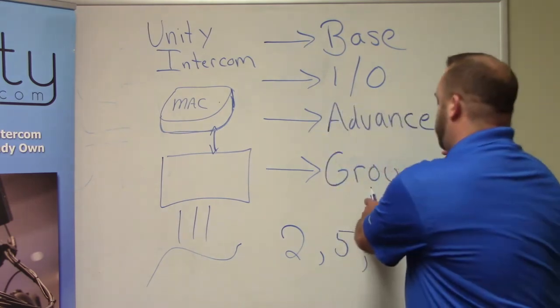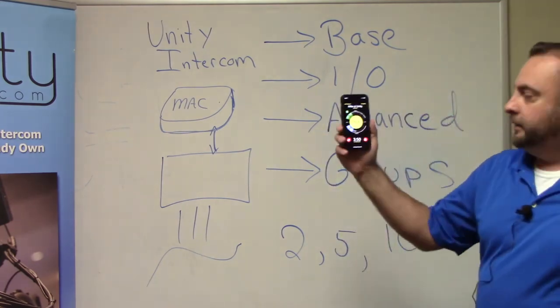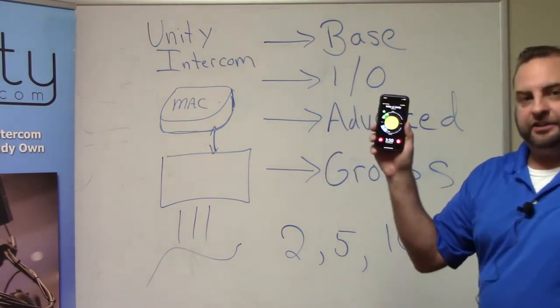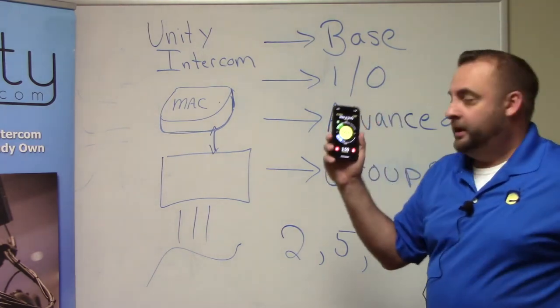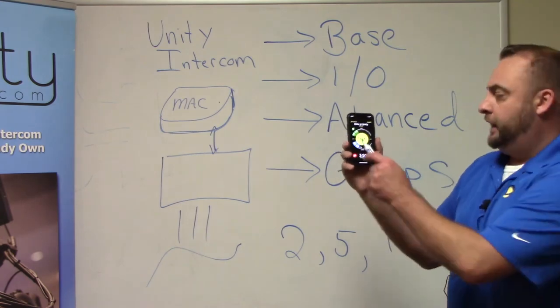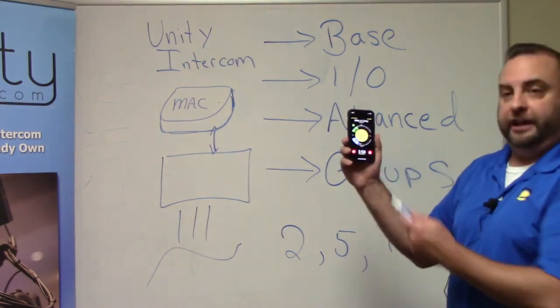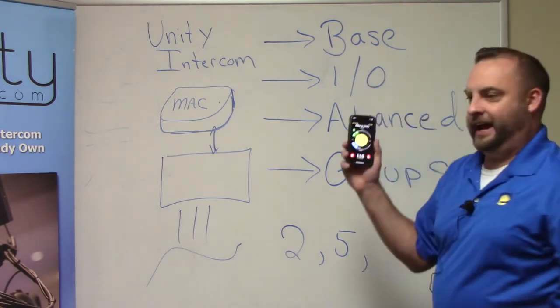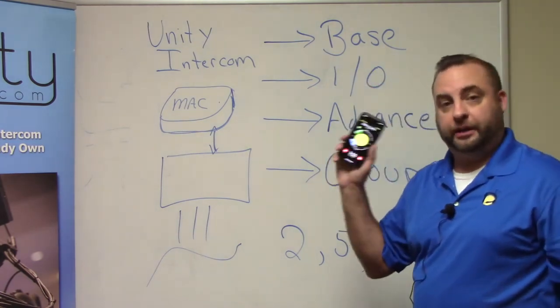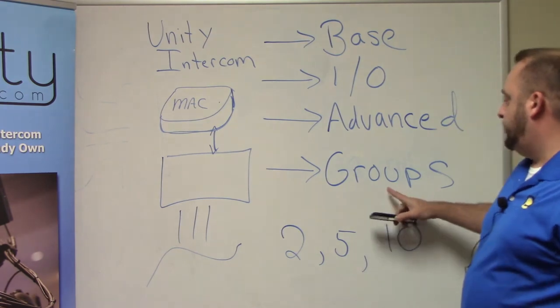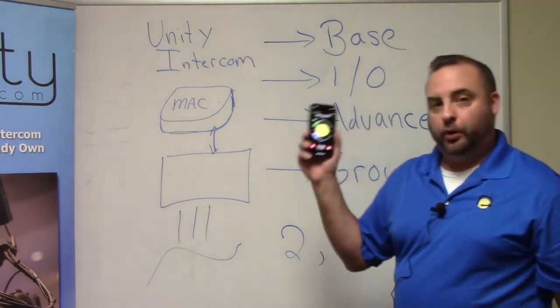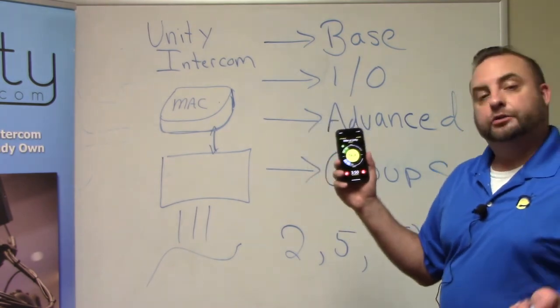The expanded channels and groups option lets me select multiple groups. So I could actually be in three or four different groups. And each one of those groups has a unique set of six party line channels. So without the groups, you're just going to have six party line channels in one group. Once you jump into the expanded channels and groups option, you're going to have up to 64 different groups and 128 channels.